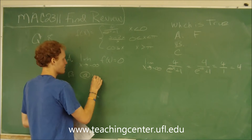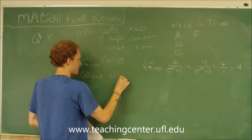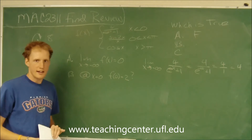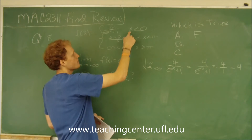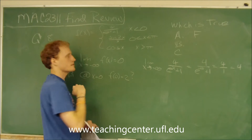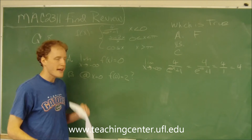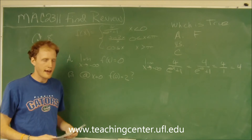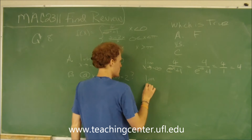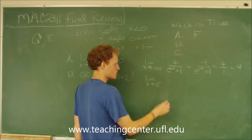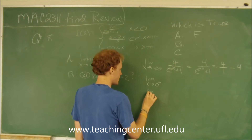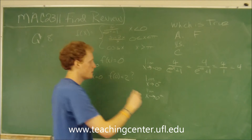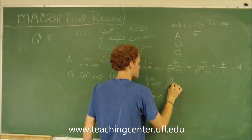At x equals 0, we have to decide between the first function and the second function. In order for it to be made continuous, the left-hand side has to equal the right-hand side — the limit from the left should equal the limit from the right. The limit from the left comes from the first part: 4 over e to the x plus 1.